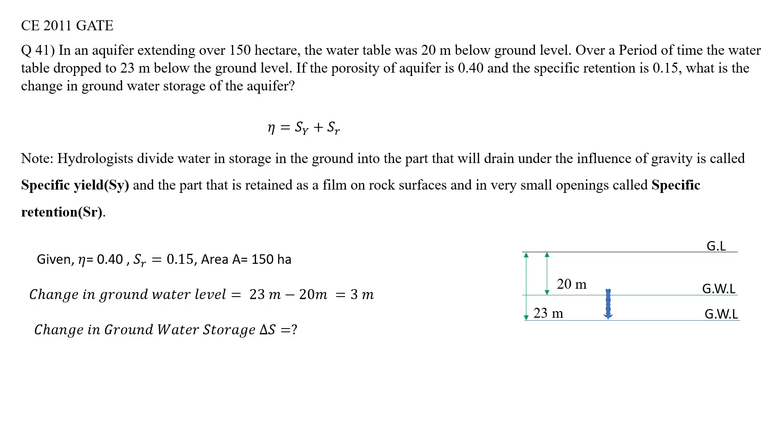Let me read the question for you. In an aquifer extending over 150 hectares, the water table was 20 meters below the ground level. Suppose this is the ground level, the groundwater level is 20 meters below. Over a period of time, we are taking water from the groundwater, so the water table dropped to 23 meters from the ground level.